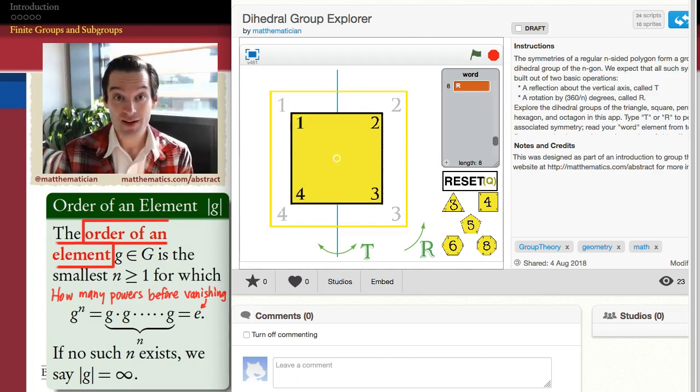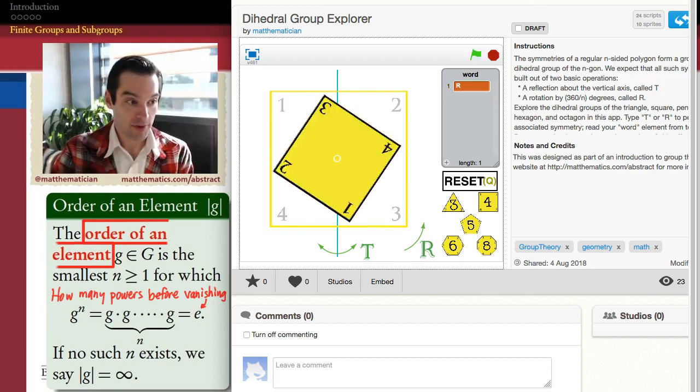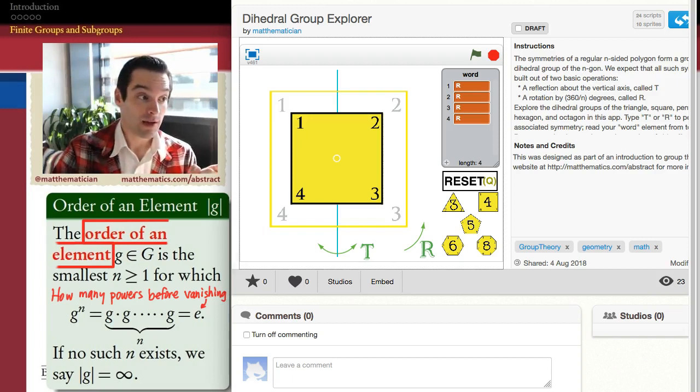And as you might expect, so is the twelfth, so is the sixteenth, so is the twentieth power, and so on. But in the definition of order, we take the smallest natural number for which that power of our element is the identity. And so the order of this rotation in the dihedral group of the square is four. There we go. The first time we see the identity in the list of powers is the fourth power.